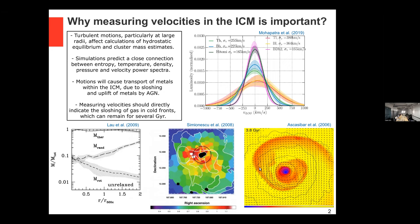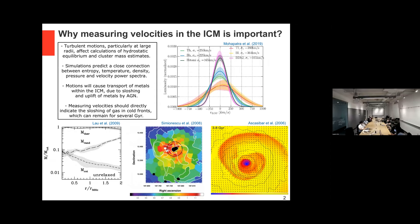Measuring velocities should provide a direct indication of gas sloshing, because we will see the structure of gas sloshing even over gigayears. This spiral pattern I am showing here is characteristic of gas sloshing, and I will mention that over and over again about this spiral pattern.